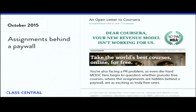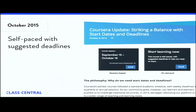In October 2015, Coursera made a very aggressive move: they pushed graded assignments behind a paywall. Now if you wanted to access graded assignments, you had to buy a certificate. This wasn't well received among learners and there were a lot of online comments, but it didn't matter. They also tweaked their scheduling so that courses are automatically started every two to four weeks, and if you don't finish within that period, you're moved to the next session — not fully session-based and not fully self-paced, but somewhere in the middle.